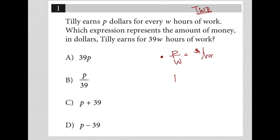So if she's making P per W in terms of dollars per hour, and we're going to multiply that by the 39W hours, then we end up with these Ws canceling out and I end up with 39P as my answer.